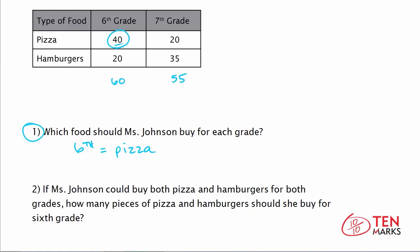Now let's take a look and see what happens when you go to the 7th graders. In 7th grade, 20 students want pizza. However, 35 students want hamburgers. So for 7th grade, she should order hamburgers.